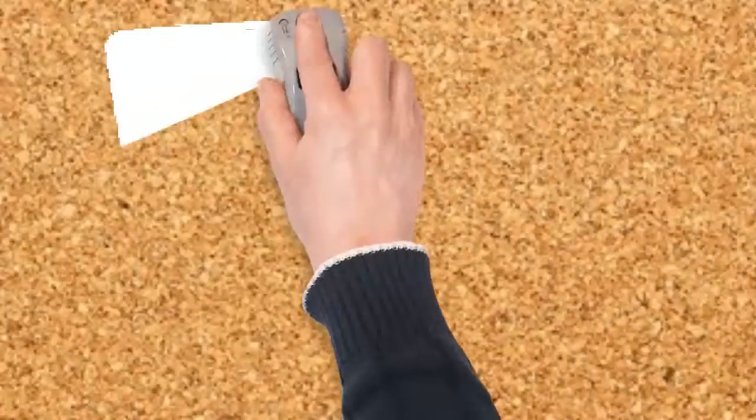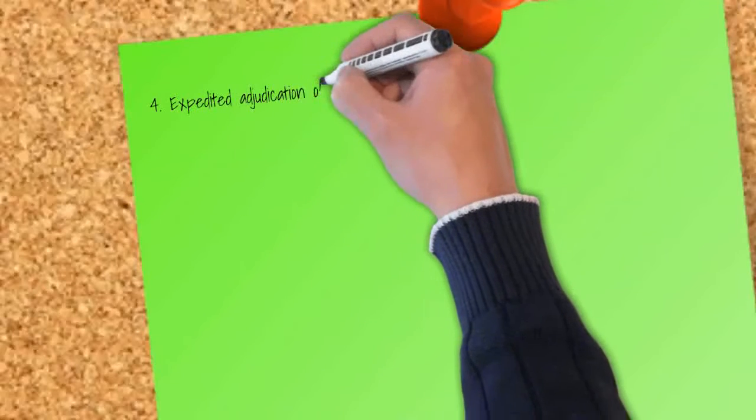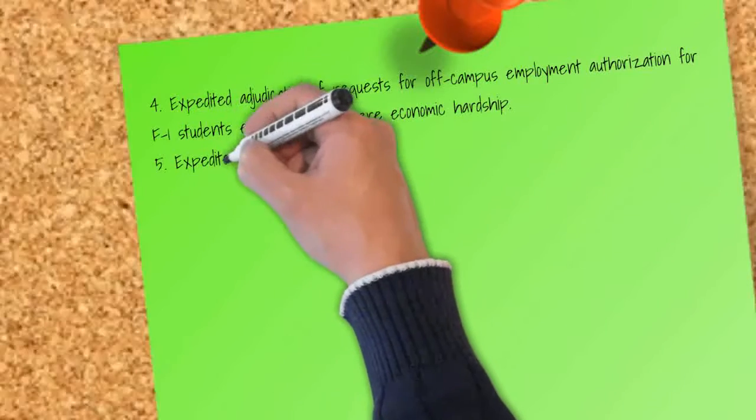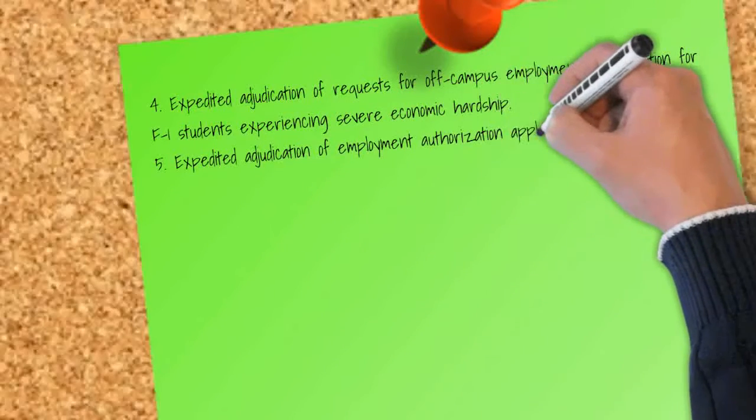Fourth, expedited adjudication of requests for off-campus employment authorization for F-1 students experiencing severe economic hardship. Fifth, expedited adjudication of employment authorization applications where appropriate.